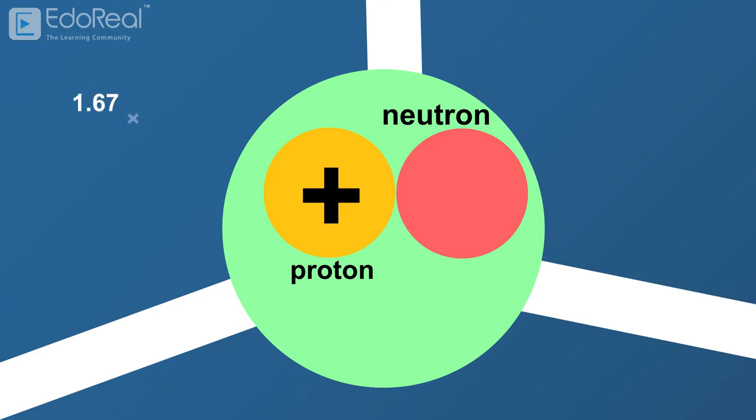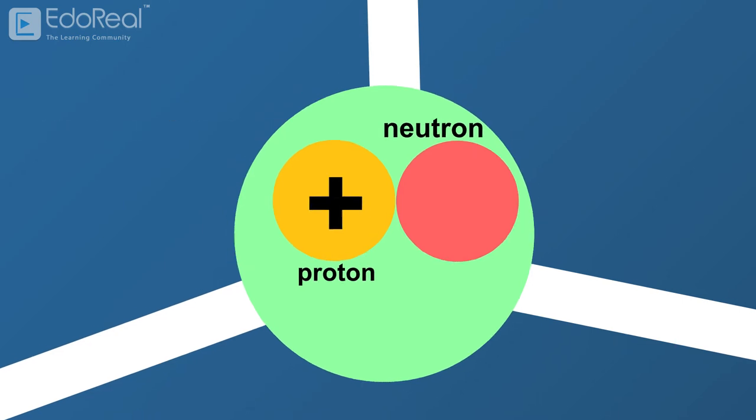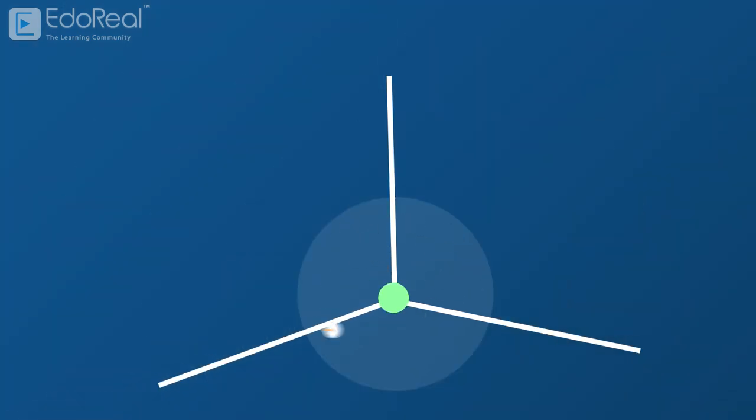They have approximately the same mass, which is defined as one atomic mass unit or one dalton. The outer region of the atom contains the atomic particles called electrons, which are revolving around the nucleus in certain orbitals. The mass of an electron is about 9.1 into 10 power minus 31 kilograms. Each electron has a negative charge equal to the positive charge of a proton.